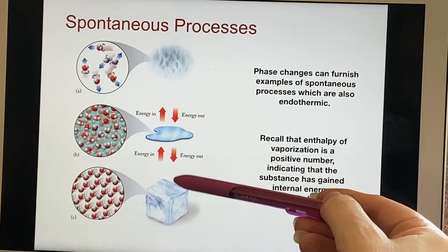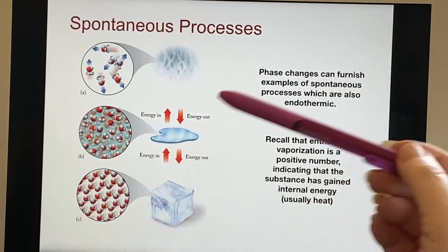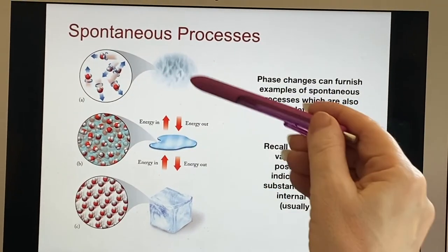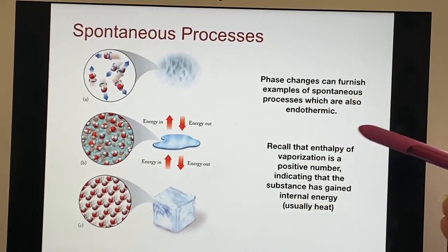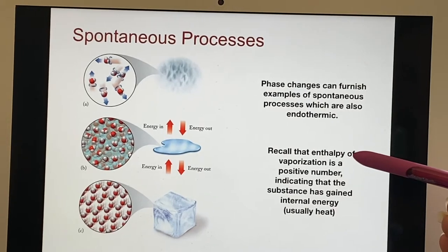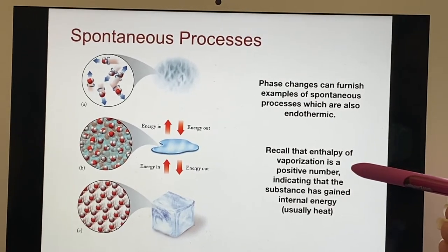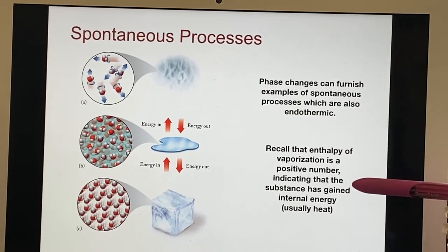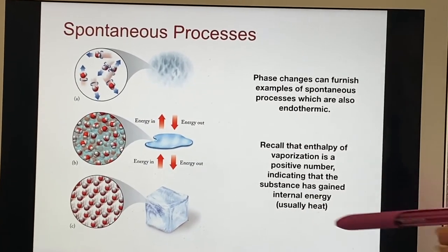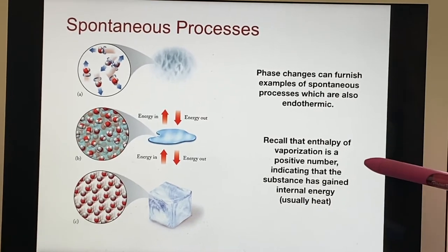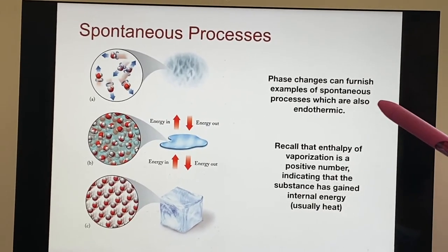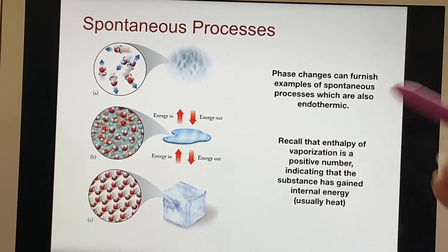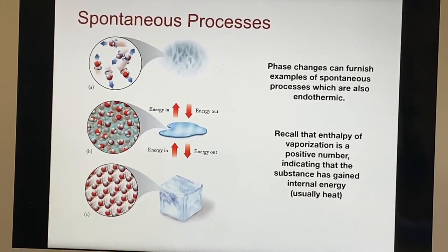And you have the same situation, which we already talked about here with the ice cube in the water. So what they mentioned here, talking about vaporization, enthalpy of vaporization is a positive number. And what that means is that substance itself has gained internal energy. And in parentheses, it says usually heat. It could be in the terms of light. If you're talking about photosynthesis, the energy comes from light, not heat, but all of those are electromagnetic radiations.